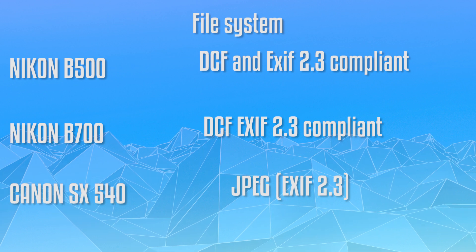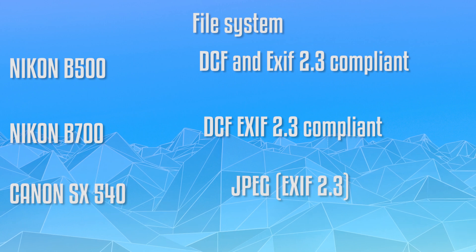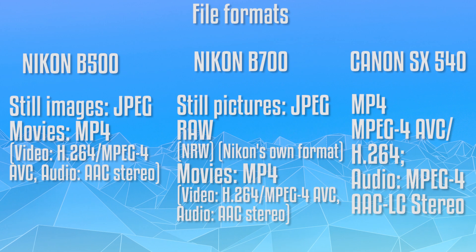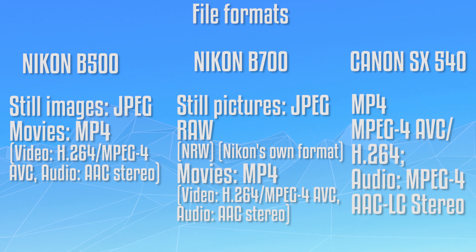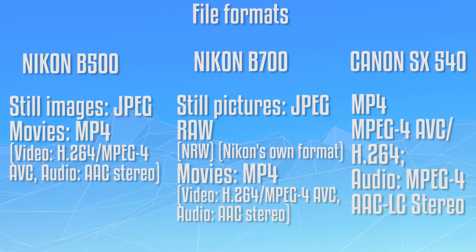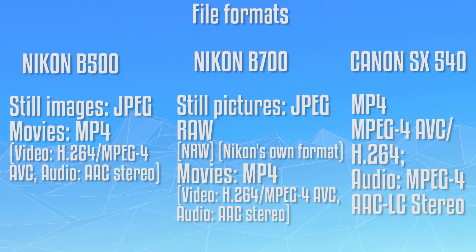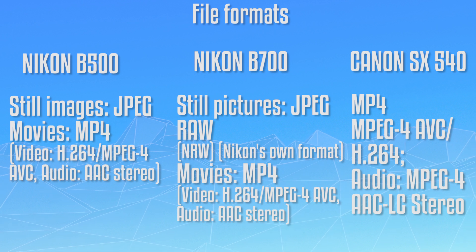All three cameras support MP4 video recording, H.264 video recording, and also MPEG. You can record clear audio and click still images of high resolution with all three. Only the Nikon B700 supports JPEG and RAW format — all three support JPEG, but if I compare them, I can clearly say that the Nikon B700 is the winner because you can shoot photos in RAW.